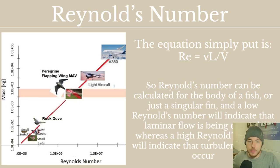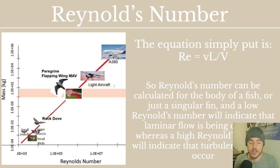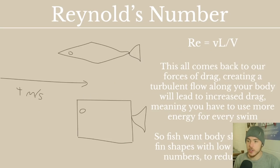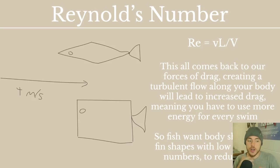Normally we calculate Reynolds number for the fish as a whole, but sometimes for particular fins. It indicates whether you're creating a laminar flow or a turbulent flow as water flows past that area. A low Reynolds number indicates that laminar flow is being created — the flow is moving nicely past that surface. A high Reynolds number indicates turbulent flow. How high versus how low will determine the balance of laminar versus turbulent flow. So fish want body shapes and fin shapes with low Reynolds numbers to reduce drag, if they're trying to go fast.